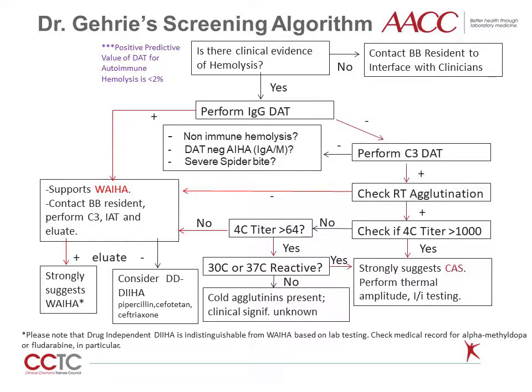This is how to think about the categorization of immune hemolytic anemia. If there is clinical evidence or suspicion for hemolysis, it is appropriate to perform a DAT, so long as we remember that the positive predictive value of a DAT for autoimmune hemolysis is very low. If the IgG DAT is positive, then the most likely diagnosis is warm autoimmune hemolytic anemia. However, if the eluate is negative, then drug-induced immune hemolytic anemia should be considered, because the drug needs to be added to the assay in order to be detected. If the IgG DAT is negative and the C3 DAT is positive, then additional testing is needed to determine if the diagnosis should be warm autoimmune hemolytic anemia or cold agglutinin syndrome.